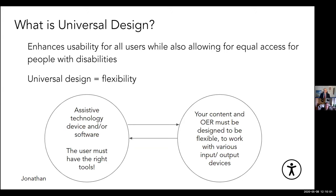I wanted to start by talking about what universal design is. Often people think universal design is something just for students with disabilities, but universal design actually helps everyone. Because universal design, in a nutshell, is just flexibility — you are designing educational resources so that they're flexible depending on how people need input and how people need to approach the information. For a lot of students with disabilities, they may use an alternate input or output device.